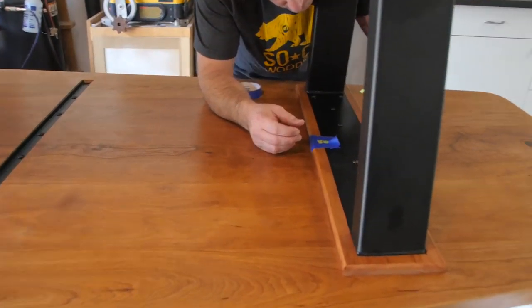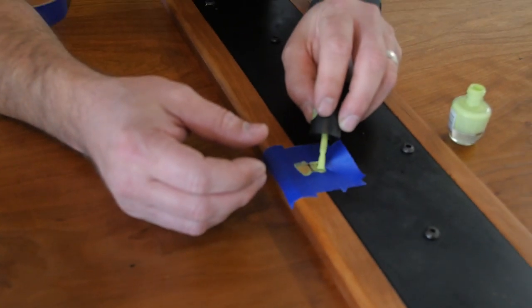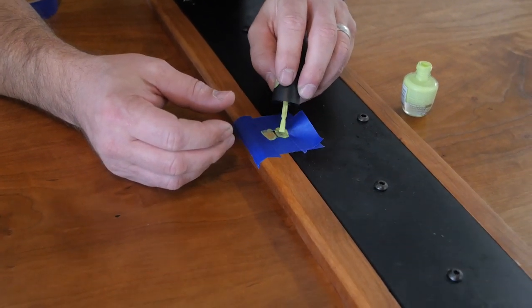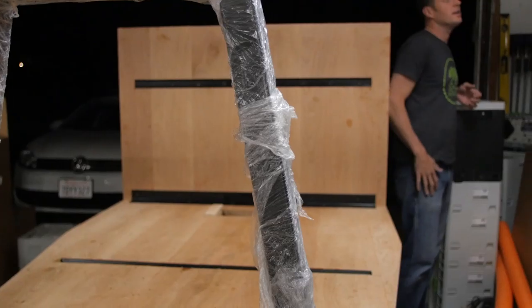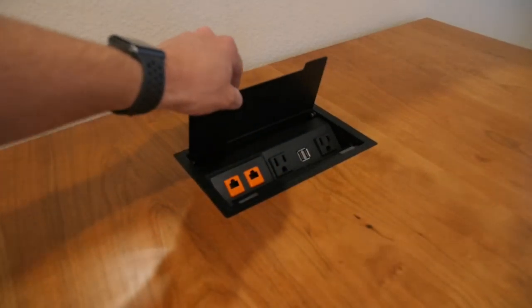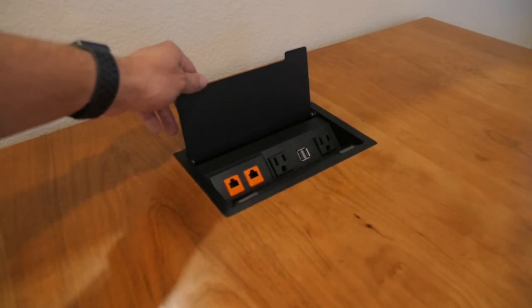We added five or six coats of satin armor seal to the table, which really brings out the grain in the cherry and gives it a nice protective finish. I also had all the steel components powder coated black, and I think it adds a really nice contrast with the cherry.